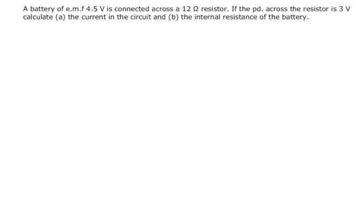A battery of EMF 4.5 volts is connected across a 12 ohm resistor. If the PD across the resistor is 3 volts, calculate the current in the circuit and the internal resistance of the battery.